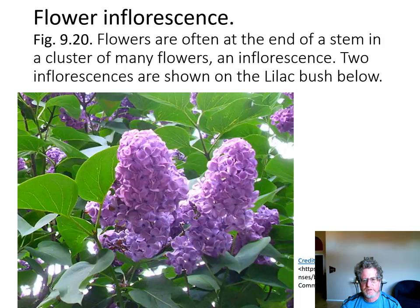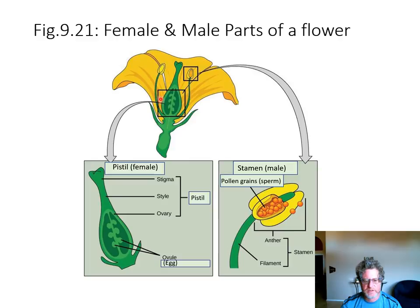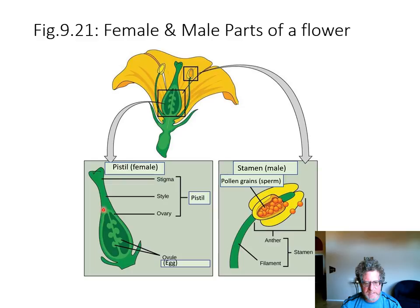The male part of the flower: the stringy part that holds up the anther is called the filament, and the top part that produces the pollen grains is called the anther. For the female part, the pistil has three sections: the stigma at the top is where the pollen grain lands; the style is what the pollen tube grows down through; and within the ovary are the ovules, which are the eggs — a different pollen grain has to fertilize each egg.